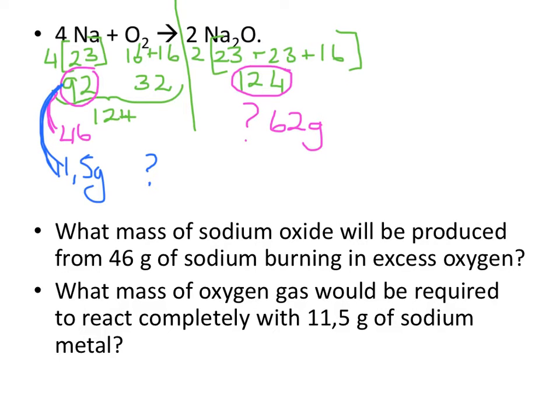I can work that out by saying 92 divided by 11.5, and I'll get 8. So it's 8 times smaller, so I'm going to take 124, I'm going to divide that by 8, and I land up with 15.5 grams.